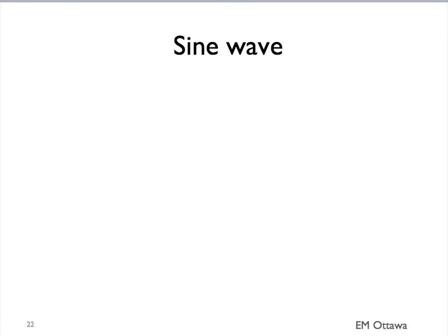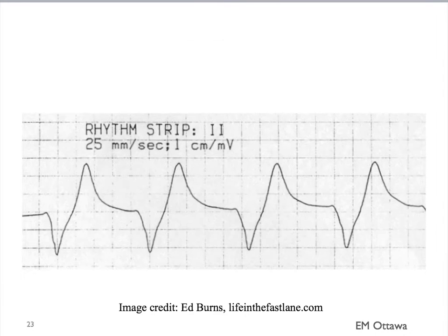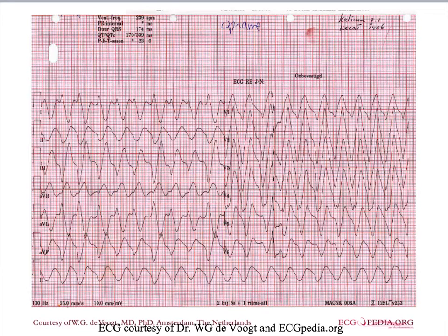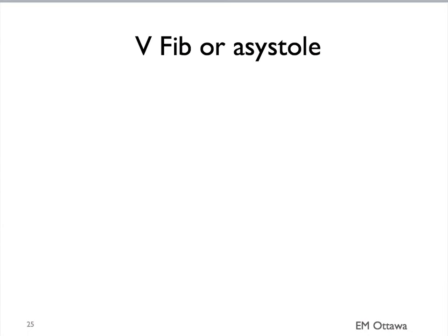As the potassium level goes higher, the QRS gets longer and longer, eventually looking like a sine wave. On an ECG strip, it will look like this. If the potassium goes higher, the patient will go into V-fib or asystole.